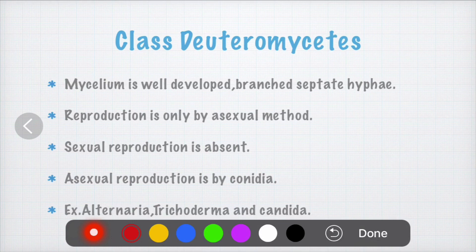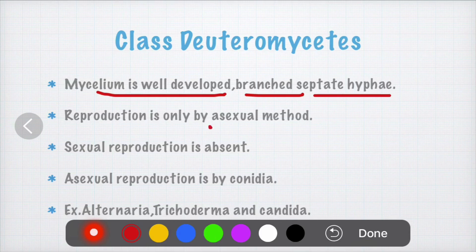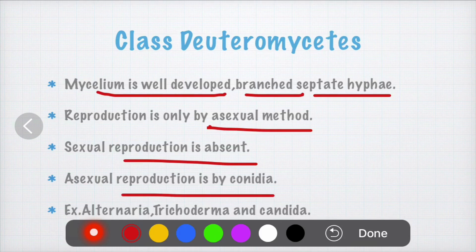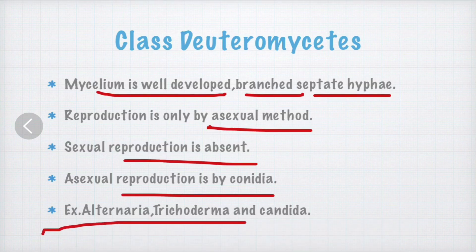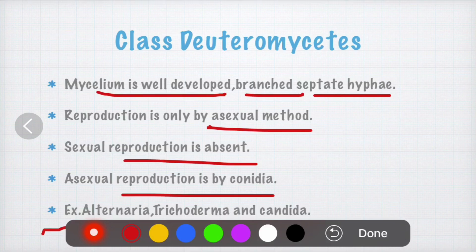In class Deuteromycetes, the mycelium is well developed and well branched with septate hyphae. Reproduction is only by asexual method because sexual reproduction is absent due to the absence of sex organs. Asexual reproduction is by conidia. Examples include Alternaria, Trichoderma, and Candida. They are called Fungi Imperfecti because they cause infections and diseases to plants, animals, and humans.